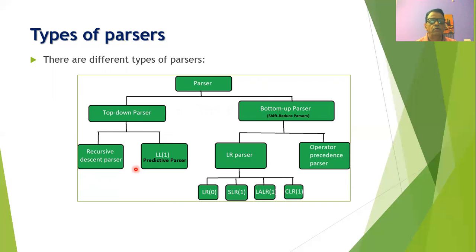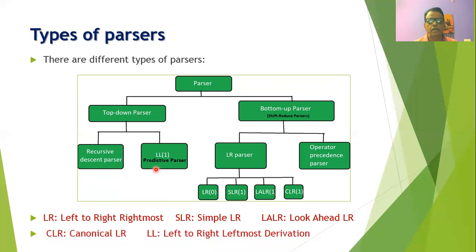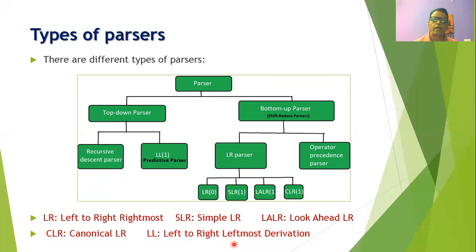In top-down parsing there are two common types. The first is called the recursive descent parser and another is called the predictive parser. The predictive parser is also called the LL parser, where the first L stands for left to right and the second L stands for leftmost derivation. In top-down parsing, leftmost derivation is performed and the scanning of the input string takes place from left to right.